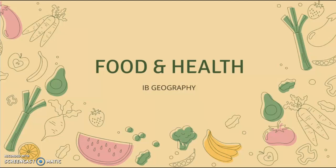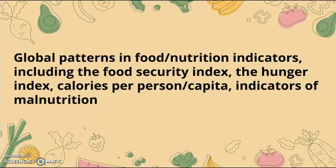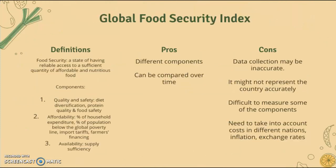This is the first video for Food and Health for IB Geography. The syllabus statement covers global patterns in food and nutrition indicators, including the Food Security Index, the Hunger Index, calories per capita, and indicators of malnutrition. I'm going to go through each of the different indicators, show what they are, evaluate them, and then show the global trends.